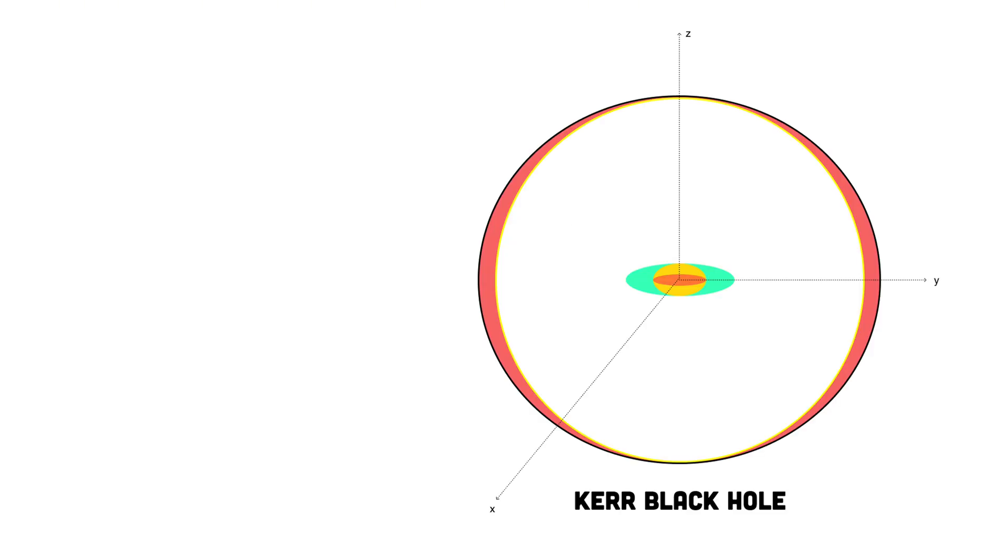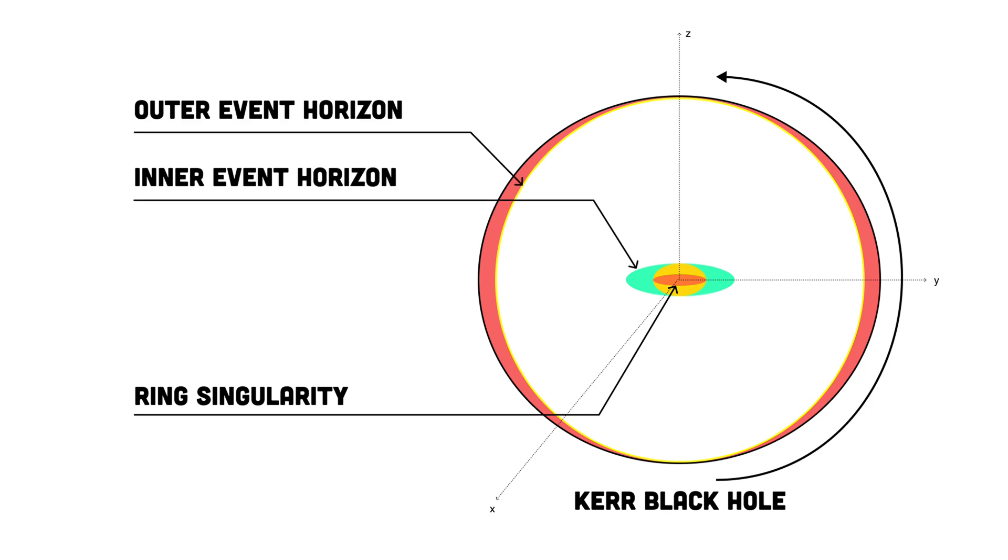Let's take things up another notch and talk about rotating black holes, also known as Kerr black holes. Instead of just sitting still, Kerr black holes spin, creating fascinating effects on space-time around them. Unlike non-rotating black holes with a point singularity, Kerr black holes feature a ring-shaped singularity. They have two event horizons, an outer and an inner event horizon. The Ergosphere is a region where space-time itself is pulled and dragged by the black hole's intense rotation, a phenomenon known as frame dragging.